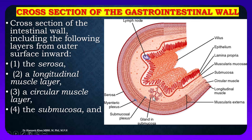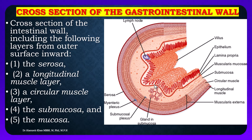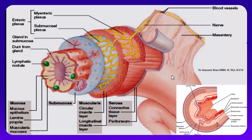The submucosa contains secretory glands. The innermost layer of the gastrointestinal tract is called the mucosa, which contains villi. This is a longitudinal view of the gastrointestinal tract showing these layers.